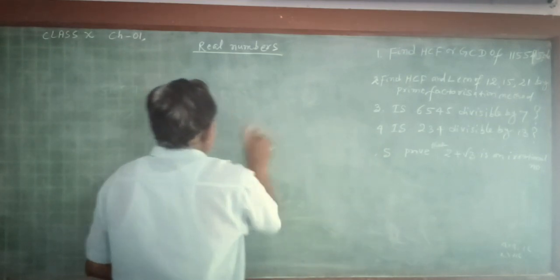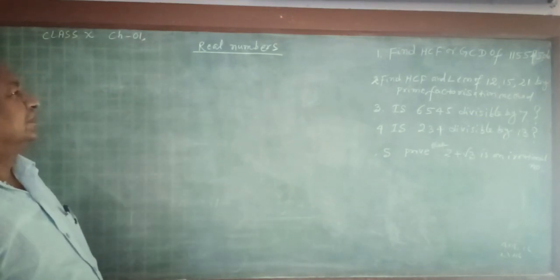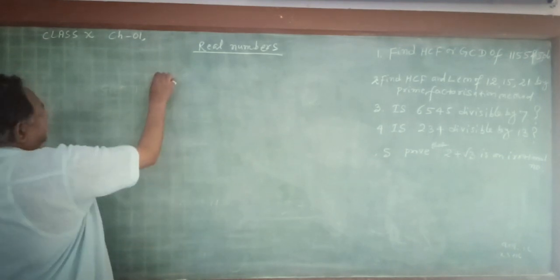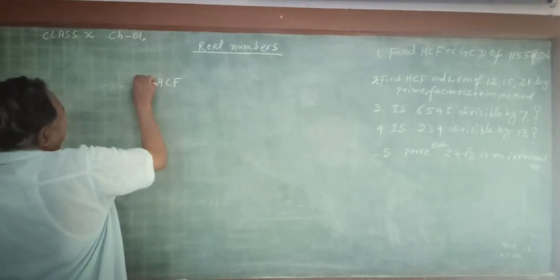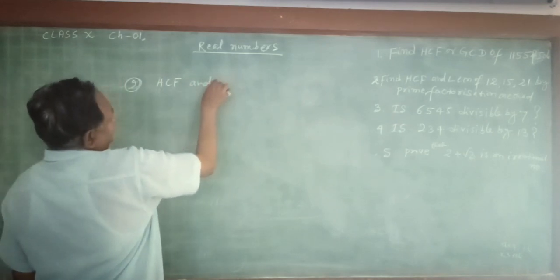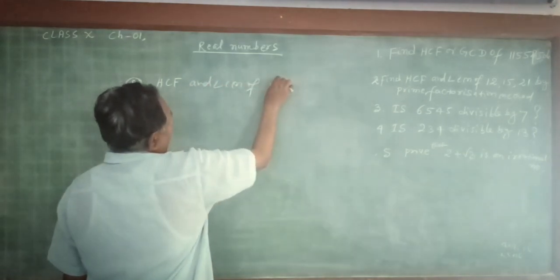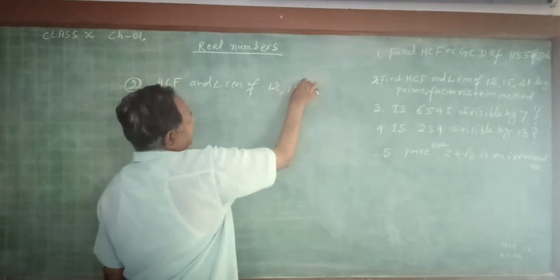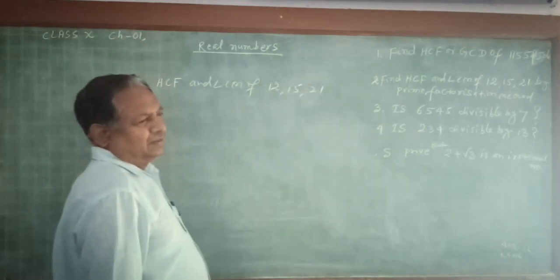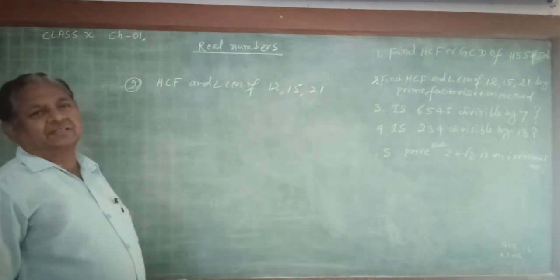Question number 2: Find HCF and LCM of 12, 15, and 21 by prime factorization method.